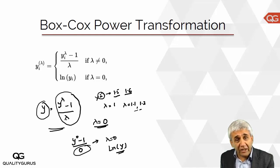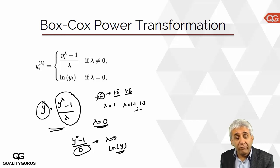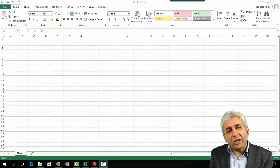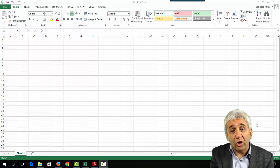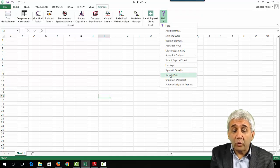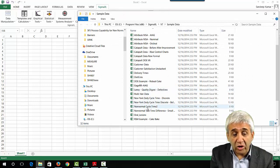We have a set of data. We will ask SigmaXL to find the appropriate value of lambda for this data, and based on that it will transform the data. With that transformed data we will find the process capability. Let's do that using SigmaXL — we are doing Box-Cox power transformation. Let's open our non-normal data by going to SigmaXL, then Help, and opening the sample data.